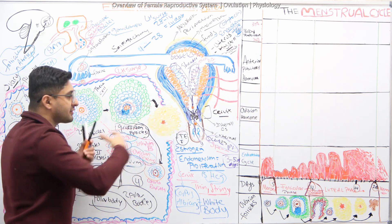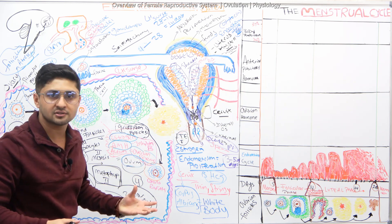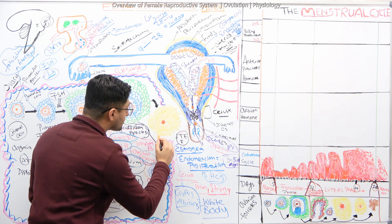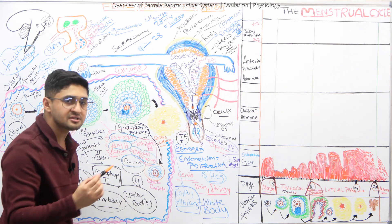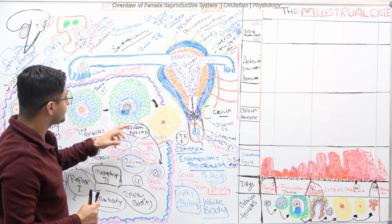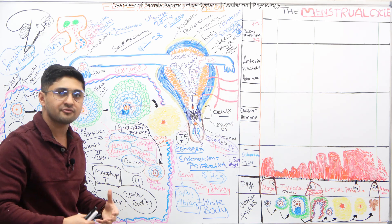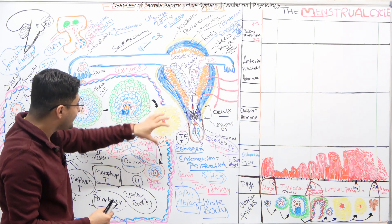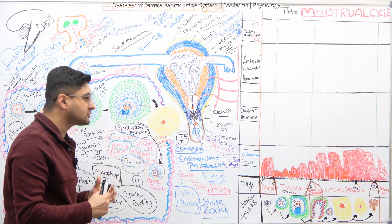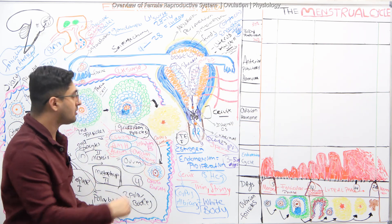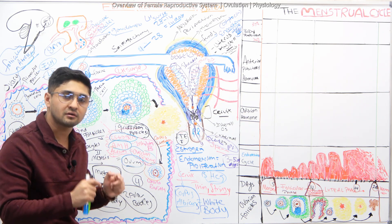After ovulation, the remaining follicular cells collapse together — this collapsed structure is known as the corpus luteum. 'Corpus' means body; 'luteum' means yellow. It appears yellowish histologically because, under LH influence, these cells secrete lipid fat globules. The corpus luteum is the temporary endocrine gland of the female.